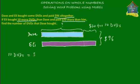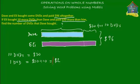So 10 DVDs cost $20. How much does one DVD cost? If 10 DVDs cost $20, then one DVD costs $20 divided by 10, which equals $2. The cost of one DVD is $2.